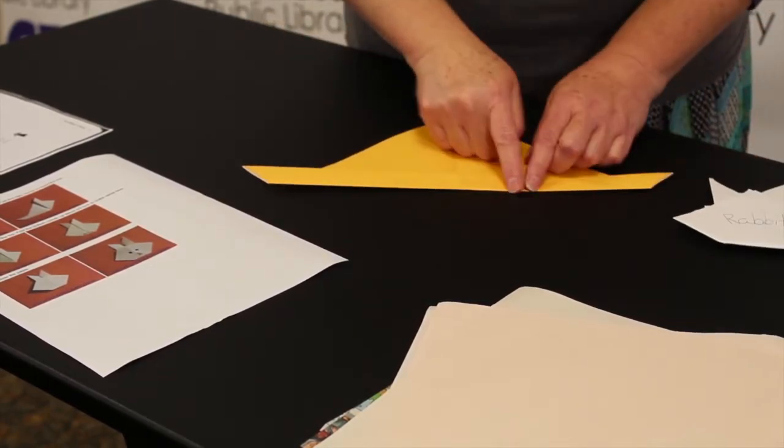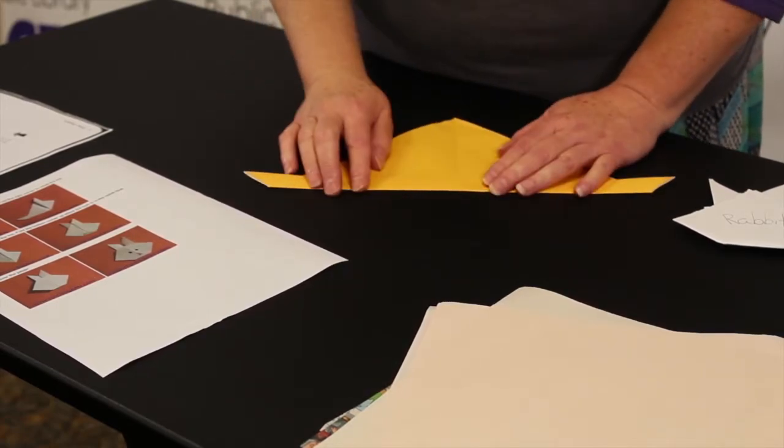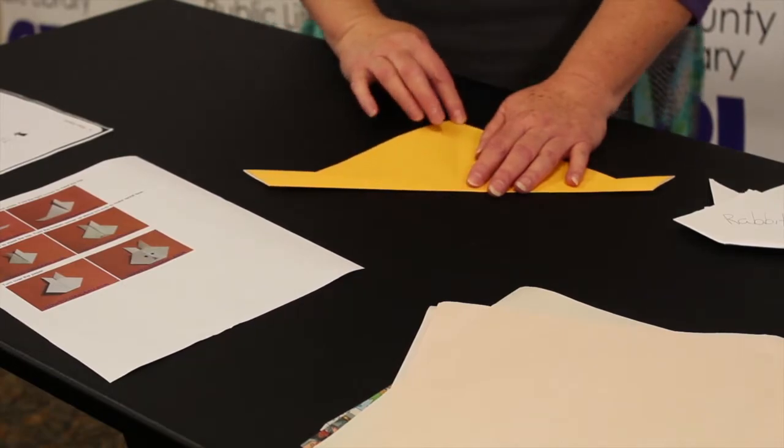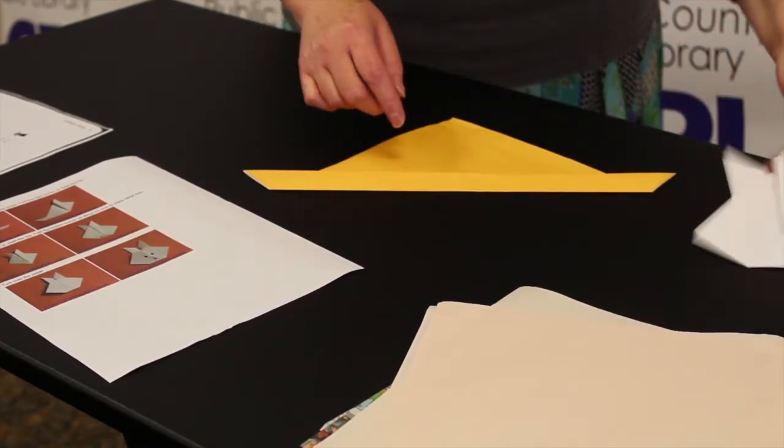Sometimes if you have a ruler, you can crease it down. Now, this is important. We have our guideline right there. We're going to make the ears. Turn this over.